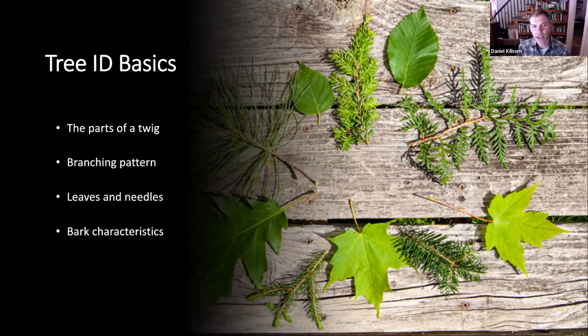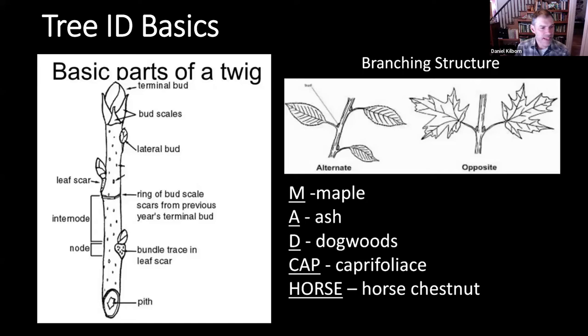To review, we'll look at the parts of the twig, branching patterns, leaves and needles, and bark characteristics. Let's get started with the parts of the twig. This will actually be really helpful for another question asker who said they find it especially hard to identify tiny saplings and they'd like to get better at that. Some of these features are going to be critical in looking at young trees.